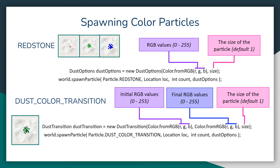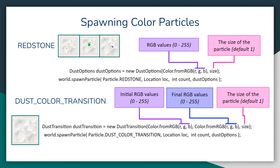Similar to the redstone one, you have dust color transition. This basically starts off as one color and then fades to another color. Instead of creating a DustOptions object, you create a DustTransition object, which takes in two colors — the first color will be the initial color and the second one will be the final color. You just want to make sure you include that DustTransition object as a parameter at the very end of the spawn particle method call.